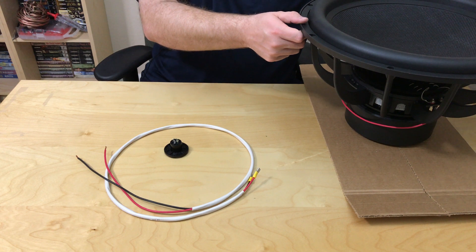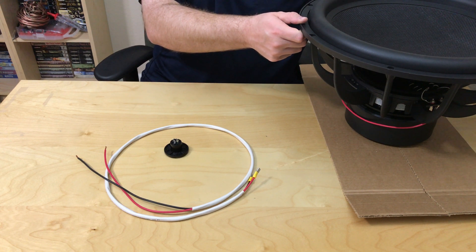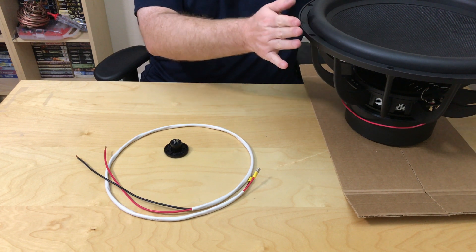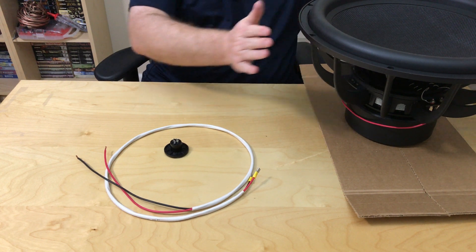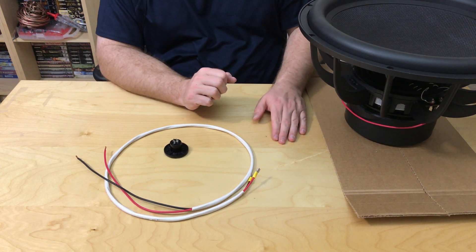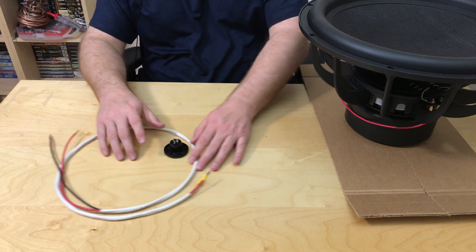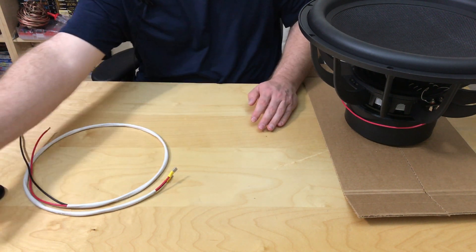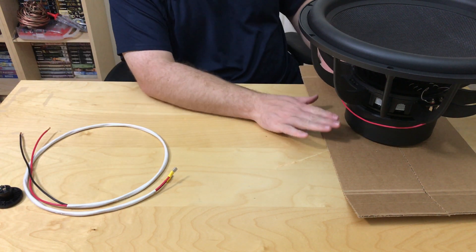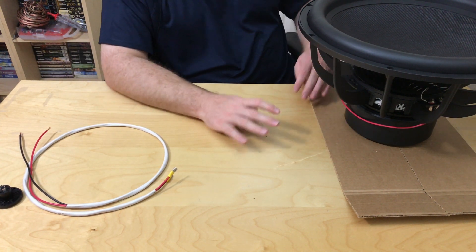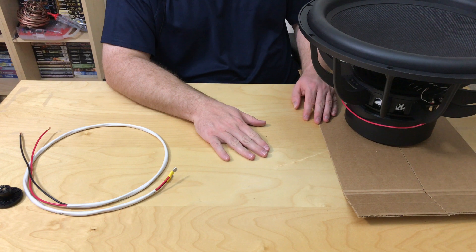So we've got an Ultimax series UM18-22 subwoofer. This is a very popular subwoofer in the DIY subwoofer world for home theater building. And I get a lot of questions of how should people wire the voice coils on this subwoofer together. So the two options are parallel and in series.